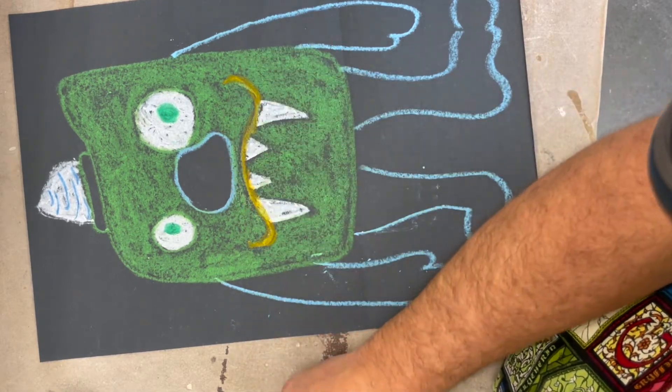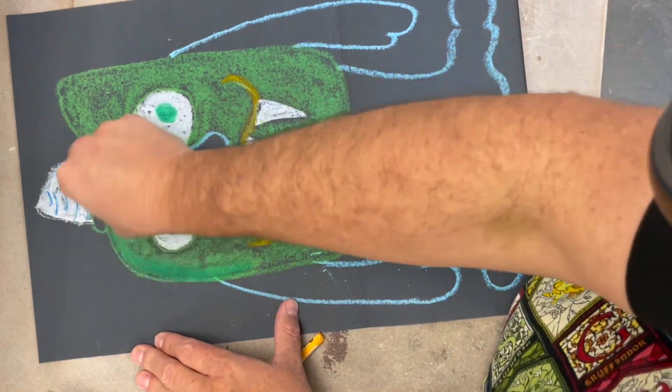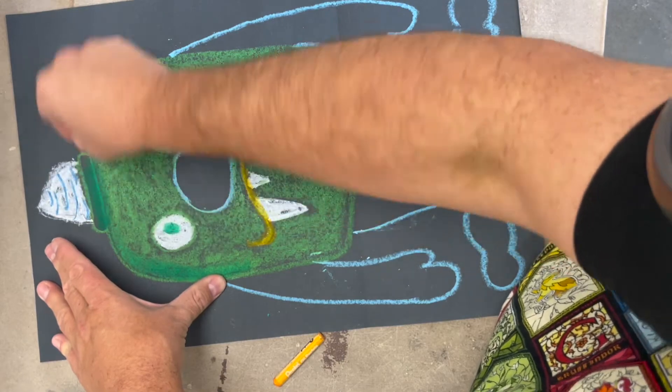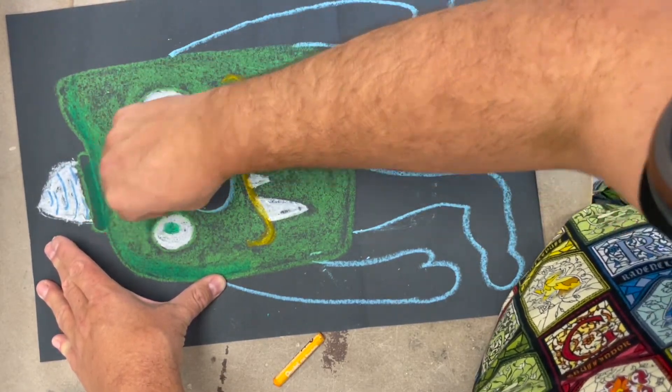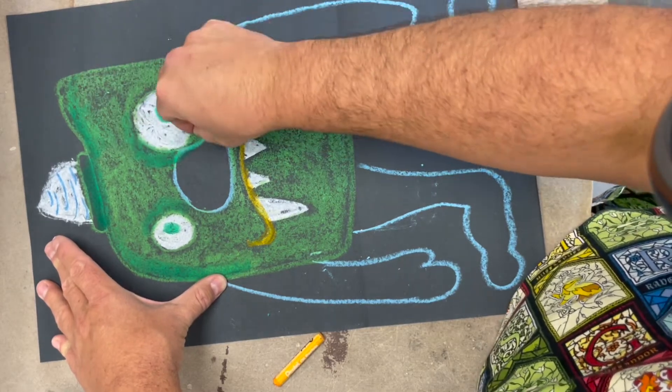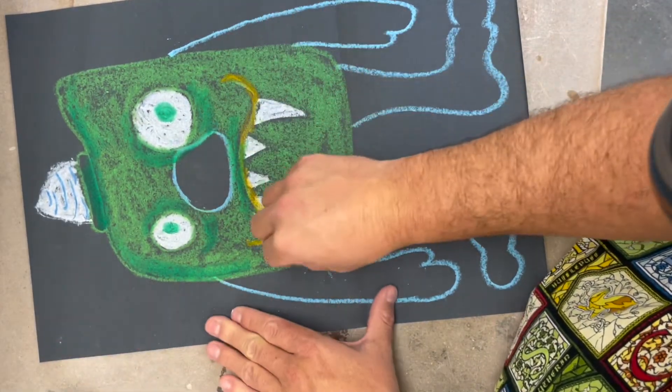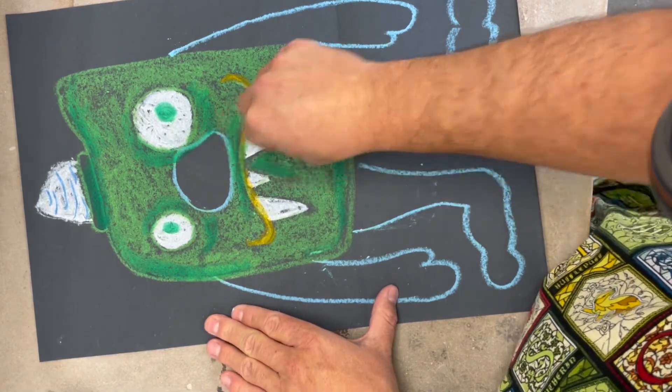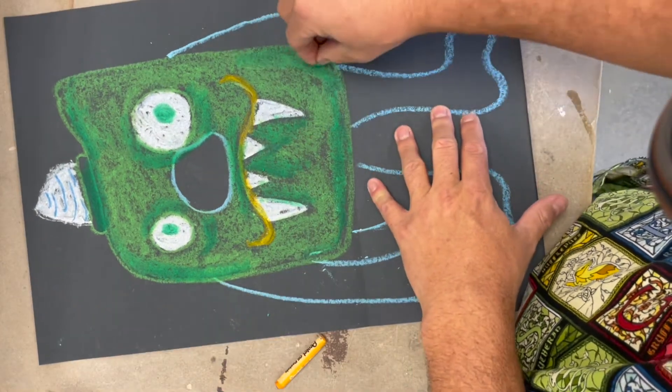And then I'll go in with some dark green and get the edges a little bit, get that dark spot up there, some dark green around his eyes and under his eyes, some up under his nose, and then in here in between his teeth, darken it out so it's kind of like shade shadows.